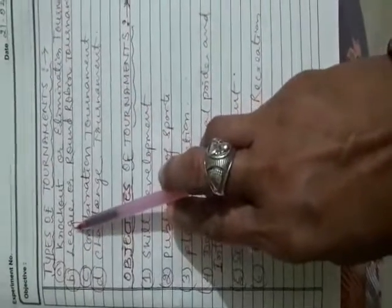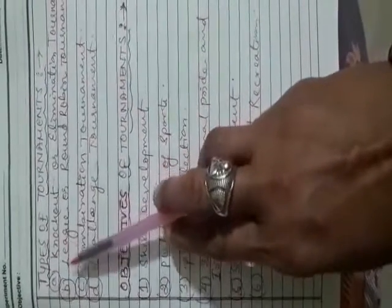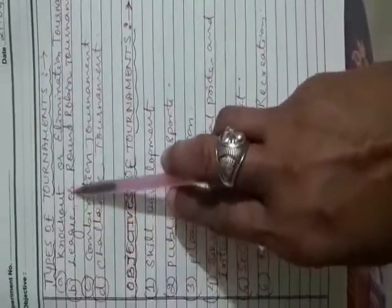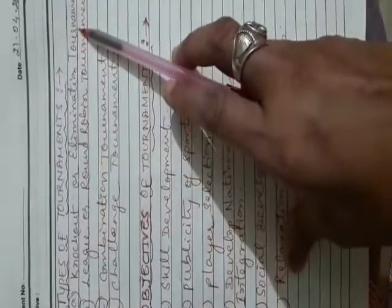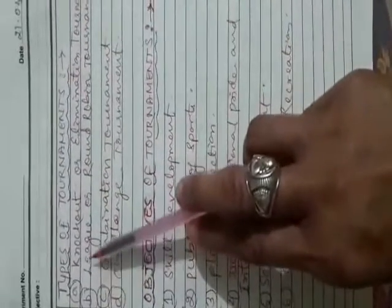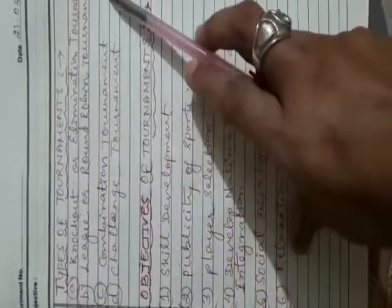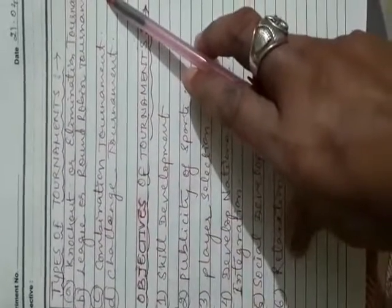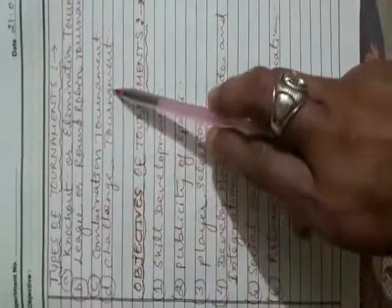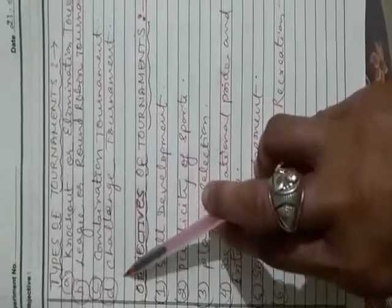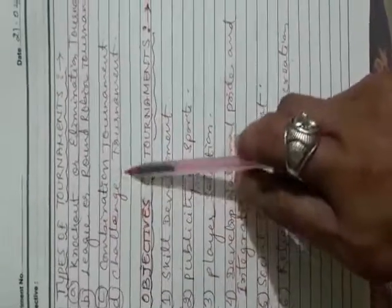Types of tournaments. There are 4 types of tournaments. 1st one: knockout or elimination tournament. 2nd one: league or round robin tournament. 3rd: combination tournament. 4th: challenge tournament.